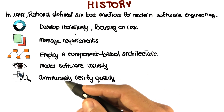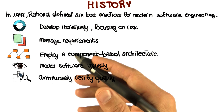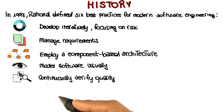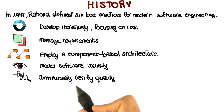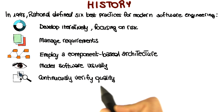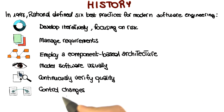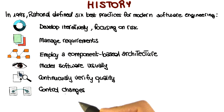The fact that the process is defined in an iterative way allows for performing quality assurance activities in a continuous way, continuously verifying quality throughout the development process. Finally, change management and control were also at the center of the Rational approach.